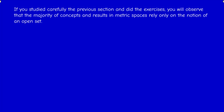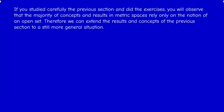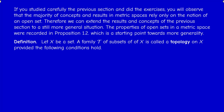Let us recall the properties of an open set first. We know from Proposition 1.2 that the empty set and the whole space are open according to our definition. An arbitrary union of open sets is an open set, and an intersection of two open sets is an open set. Therefore, if we denote by calligraphic T the collection of open sets, we can restate Proposition 1.2 as follows.